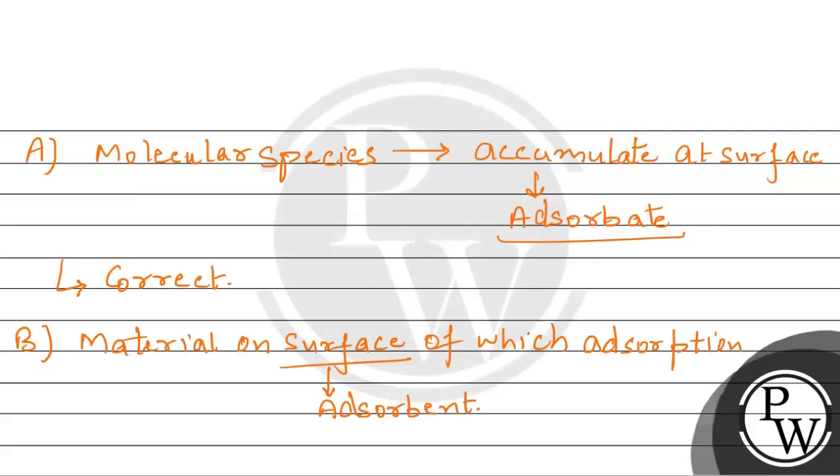To us material ko hum bolte hain adsorbent, jahan par adsorption ho raha hai, jahan par dusra jo substance hai, yarni ki adsorbate, accumulate ho raha hai, to usko adsorbent bolte hain. To ye bhi jo hai option, correct hua.